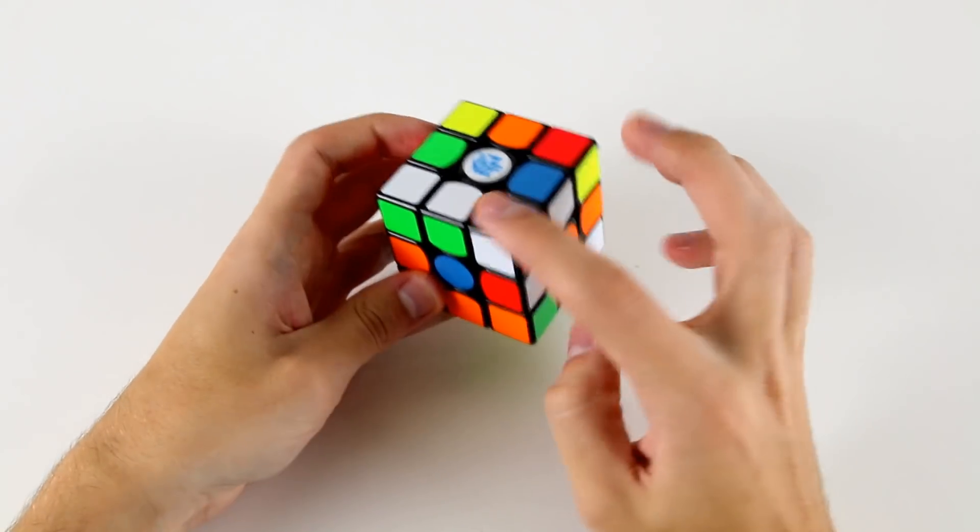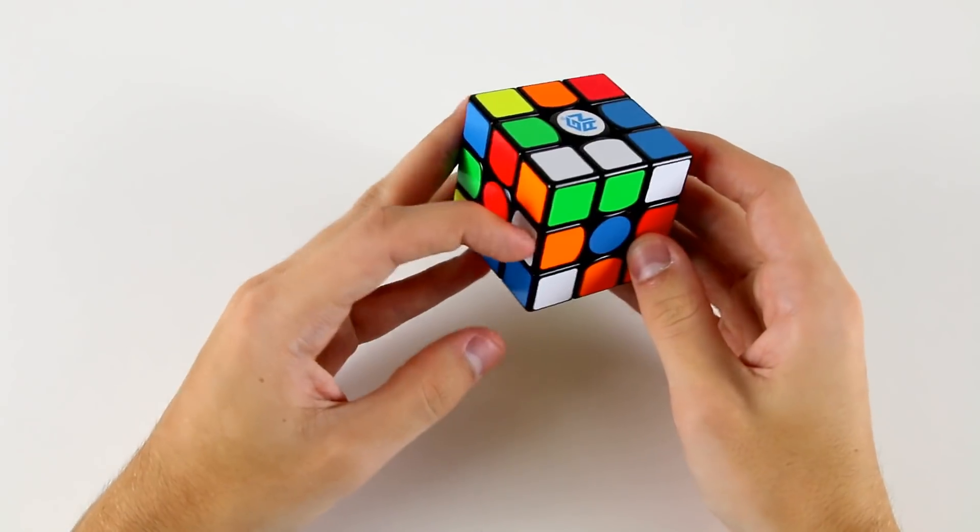Okay, let's look for the white cross pieces. We've got this one, this one, this one, and this one here.